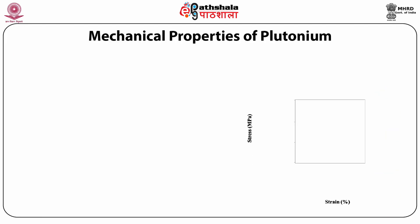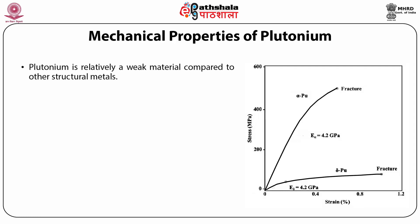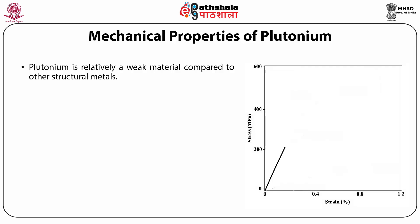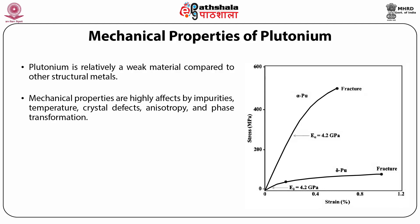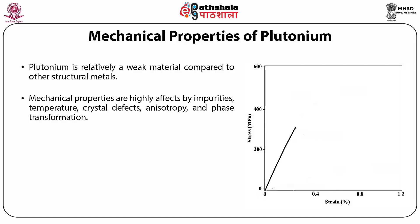Next, we will discuss about the mechanical properties of plutonium. Plutonium is relatively a weak material compared to other structural materials or metals, as mechanical properties are highly affected by impurities, temperature, crystal defects, anisotropy and phase transformation. Hence, high temperature application of pure plutonium is not possible.